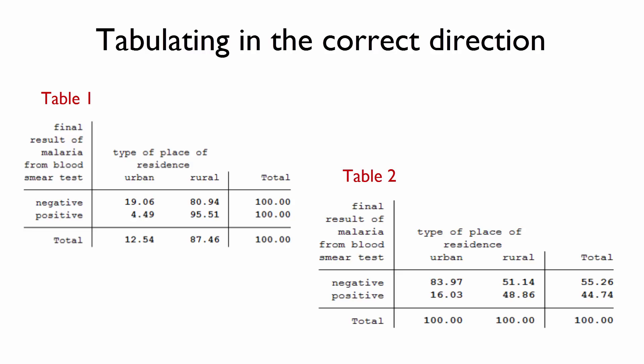Now let's look at table 2. This table shows that the malaria prevalence among urban children under 5 is 16% and 49% among rural children under 5. We can tell that these are column percentages because the 100 percents are at the bottom of the table. Make sure in your programming that the column percentages are used correctly.